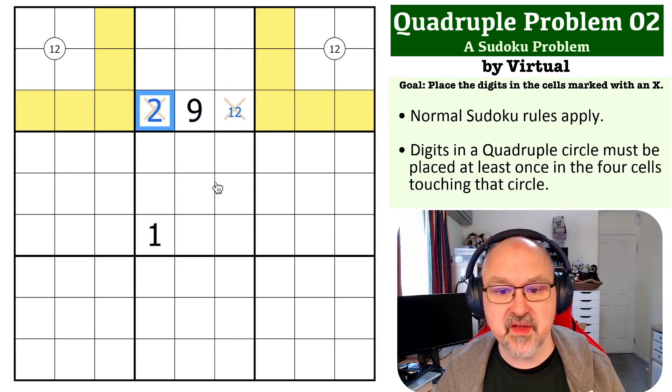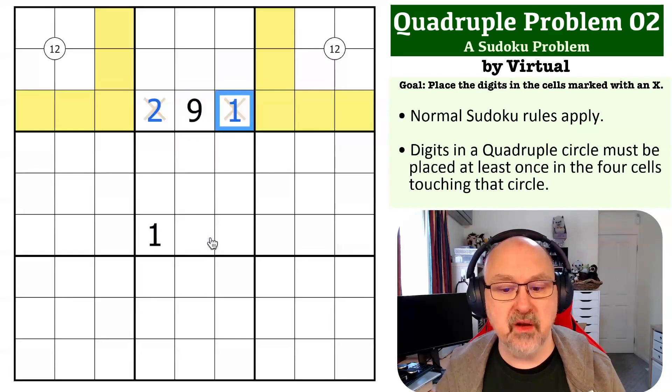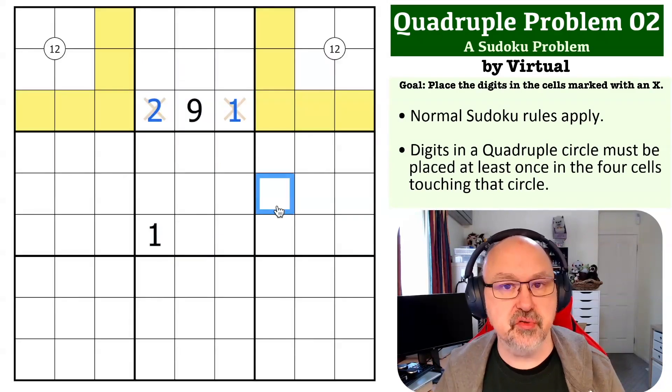But there's a one looking at that cell. So that becomes the two, that becomes the one, and that is the solution to the problem.